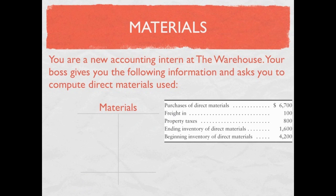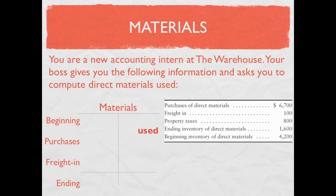We'll start with the T-account. This is an inventory account so it's an asset, so any beginning and ending inventories will appear on the debit side. We know we start with beginning materials. Purchases make materials go up, and freight in is not an expense but is considered part of the cost of our inventory — in this case our materials. When materials move out of our inventory account into work in process, that's called materials used.